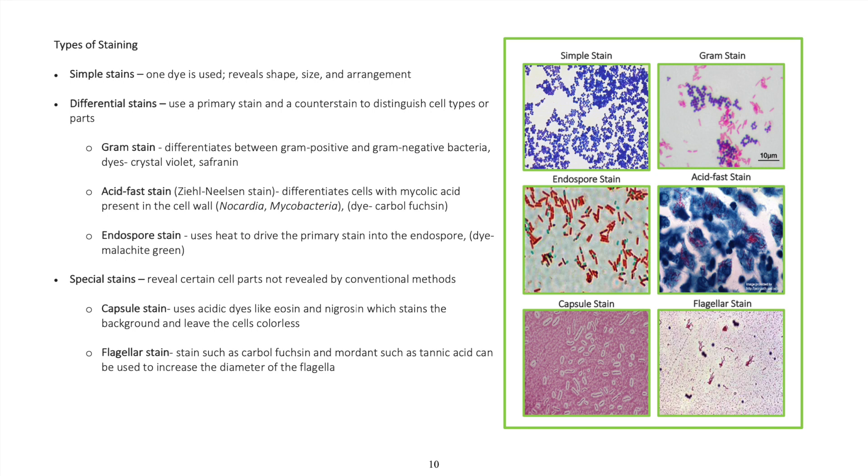Differential stains use a primary stain and a counterstain to distinguish cell types or parts. Gram stain differentiates between gram-positive and gram-negative bacteria using dyes like crystal violet and safranin.